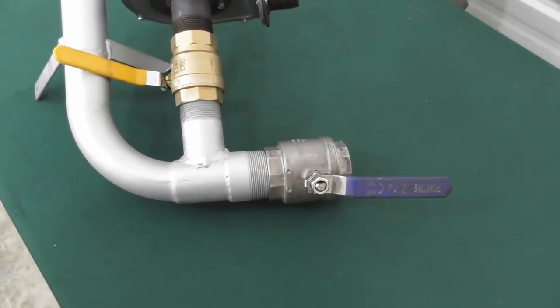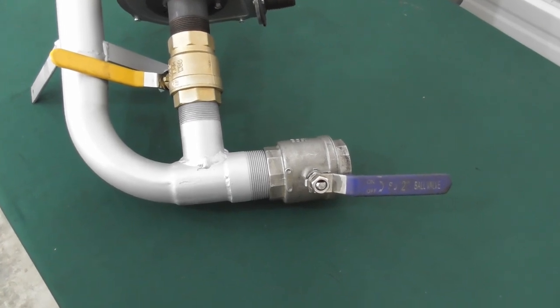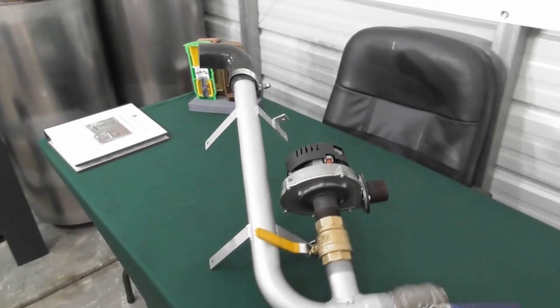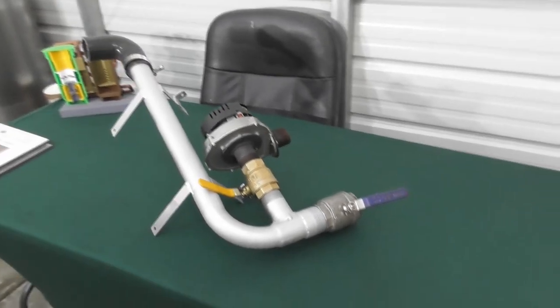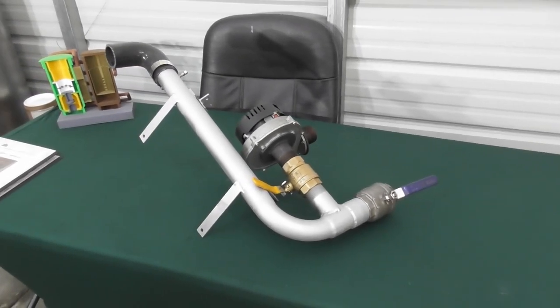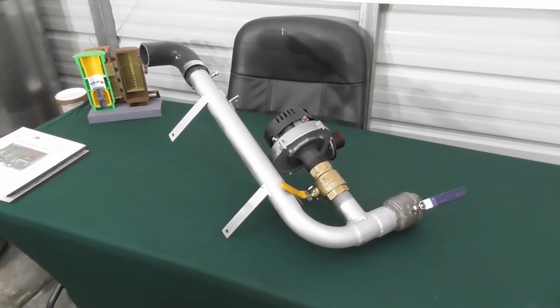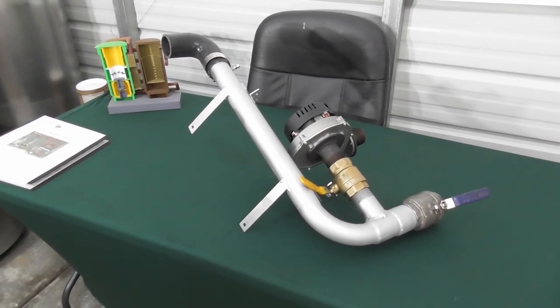On the bottom here I've got a two inch ball valve so we can go out to an engine. So that's the completed assembly. It's pretty straightforward. Everything's looking good. Let's go ahead and move on to our next assembly.